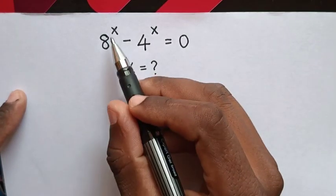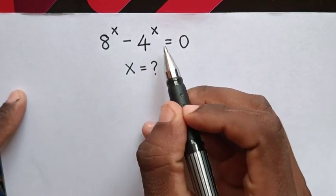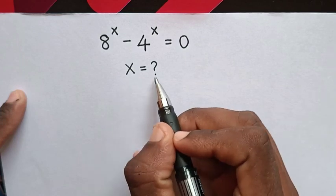Hello. How to solve 8^x - 4^x = 0 to find the value of x.